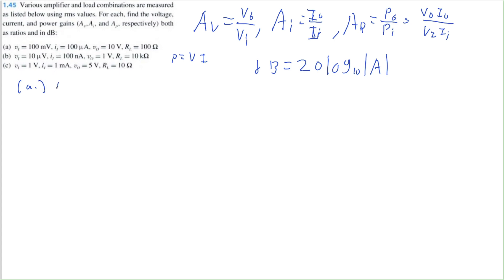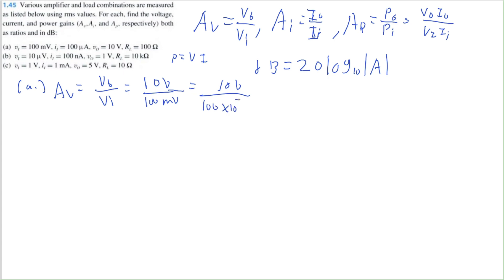Let's start with part A. The voltage gain is equal to output voltage divided by input voltage, and we're given both of those values. So it's 10 volts divided by 100 millivolts, making sure to use the same units — 100 times 10 to the negative 3 volts. That gives 100 volts per volt, and in dB that's 20 log base 10 of 100, which equals 40 dB.